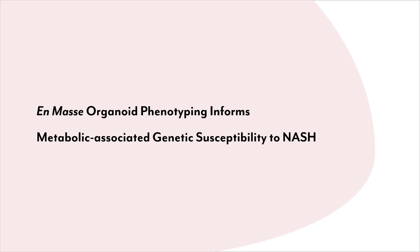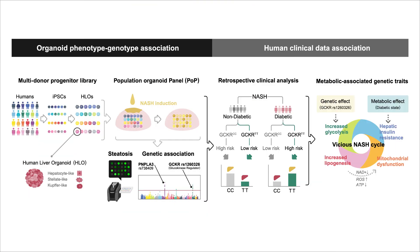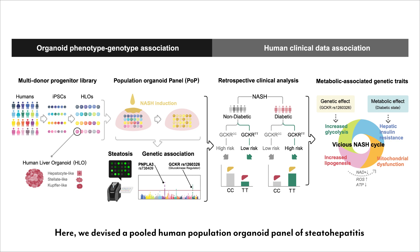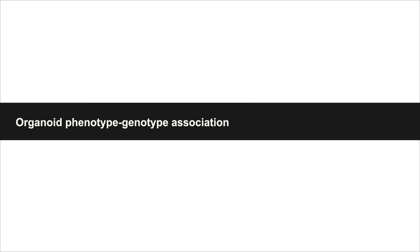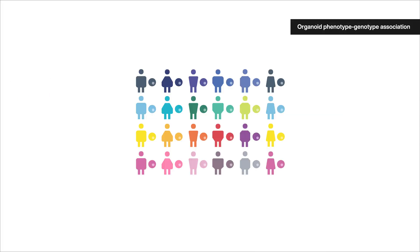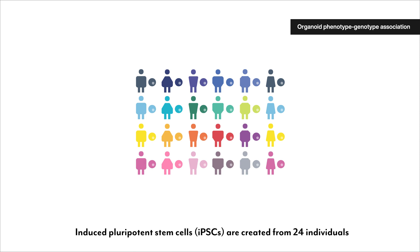On-mass organoid phenotyping informs metabolic-associated genetic susceptibility to NASH. Here we devised a pooled human population organoid panel of steatohepatitis to investigate the impact of metabolic status on genotype-phenotype disease association. Induced pluripotent stem cells are created from 24 individuals.